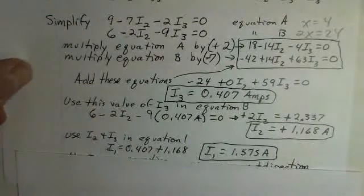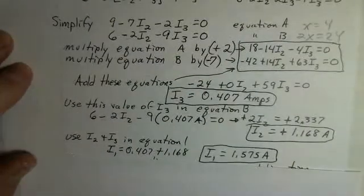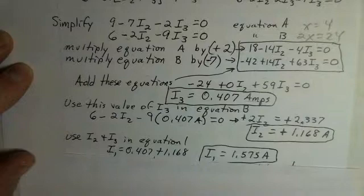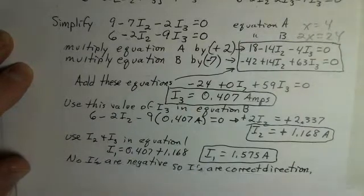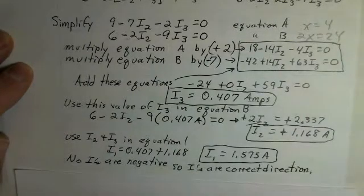Now we put in the I2 and the I3 values and we can calculate I1. So we've solved the system here. We found the current in each branch.